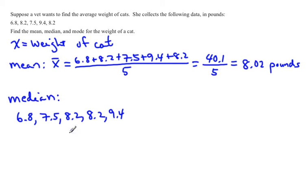And then to find the median, you just start at the outside and work your way in. There's 6.8 and 9.4, then 7.5 and 8.2, and so our median is that middle number of 8.2. So there's no symbol for median. Normally we just write M-E-D, and it's 8.2. And again, the units are exactly the same, pounds.